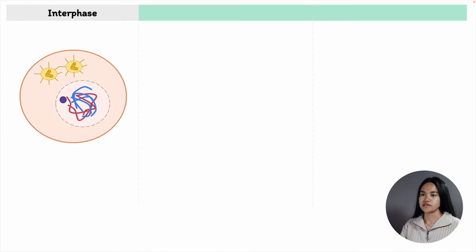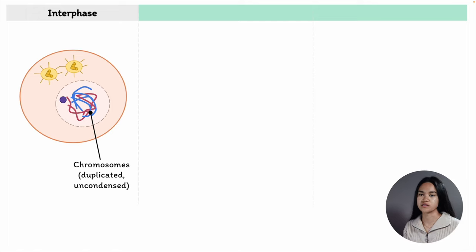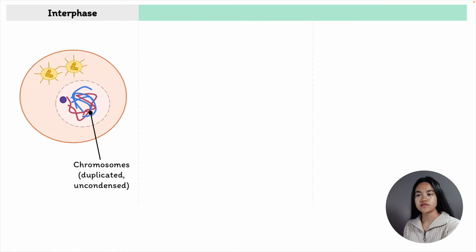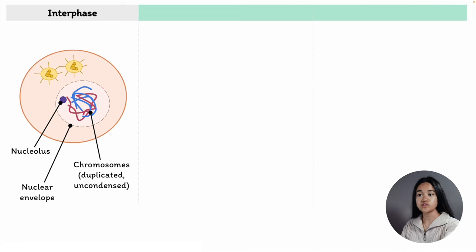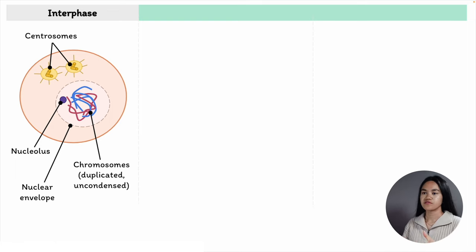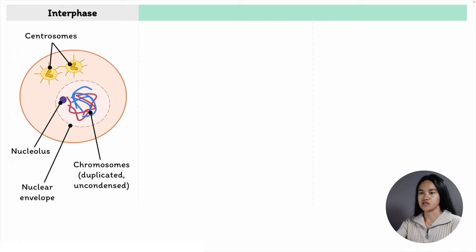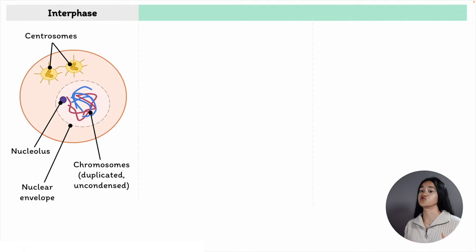The duplicated chromosomes can't be seen yet because they are still in their decondensed form. We also have the nucleolus and nuclear envelope, and the two centrosomes, each with two centrioles — a type of microtubule organizing center. When we break down the phases, we're going to pay close attention to three things: the nucleus, which houses the chromosomes; the nuclear envelope; and the centrosomes, which organize the microtubules and form the mitotic spindle.